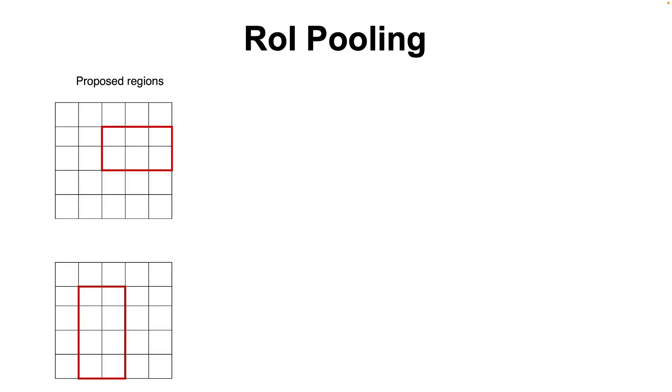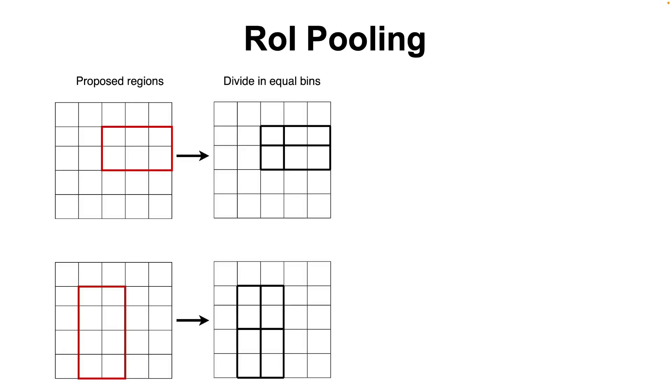The second major change is that Fast R-CNN uses a region of interest pooling layer to extract a fixed length feature vector from each proposed region. The ROI pooling layer divides each region into a fixed number of rectangular bins independent of the input shape and then outputs a single value by performing max pooling within each bin.